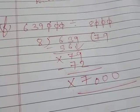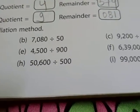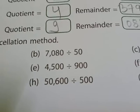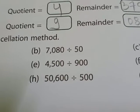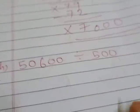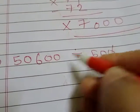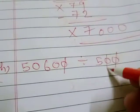After this, question number H I will solve for you. 50,600 divided by 500. Very simple. This also, you can see ones place zero will be cancelled with ones place, tens place will be cancelled with tens place.